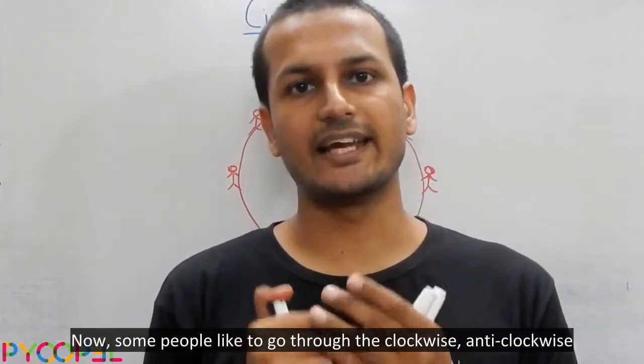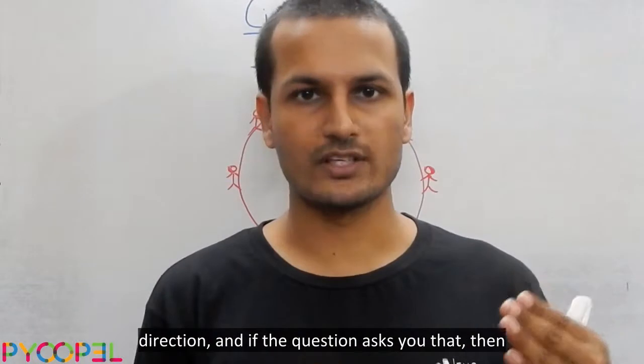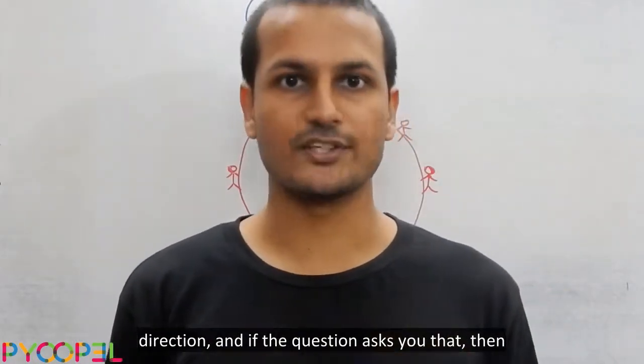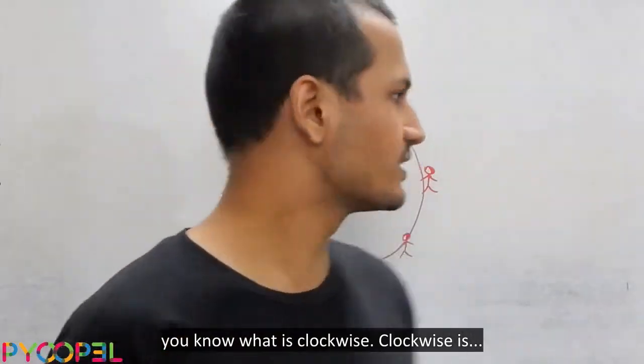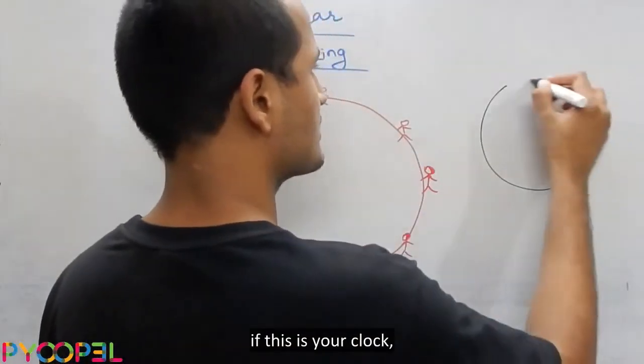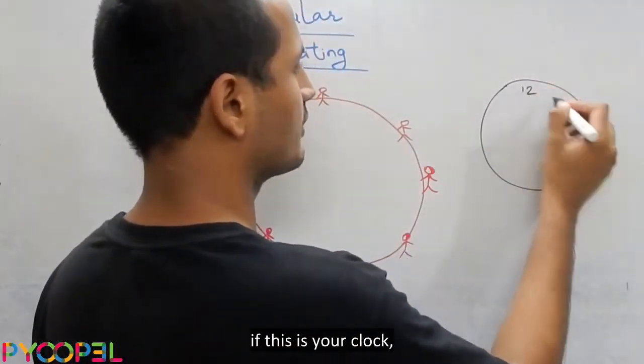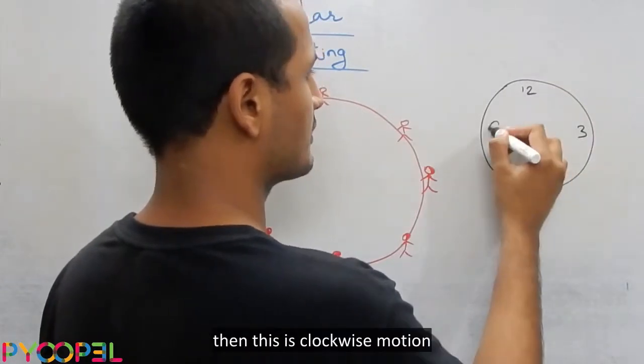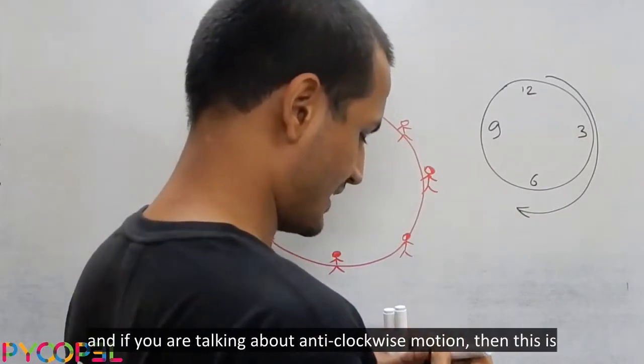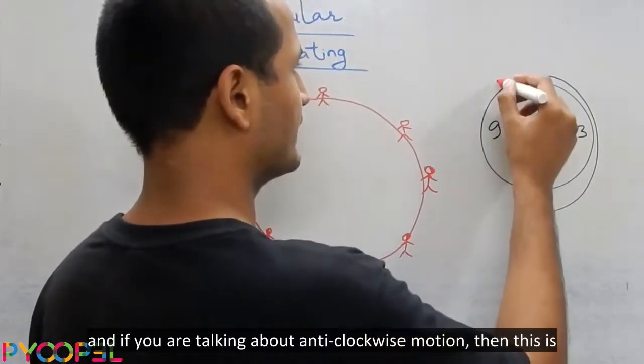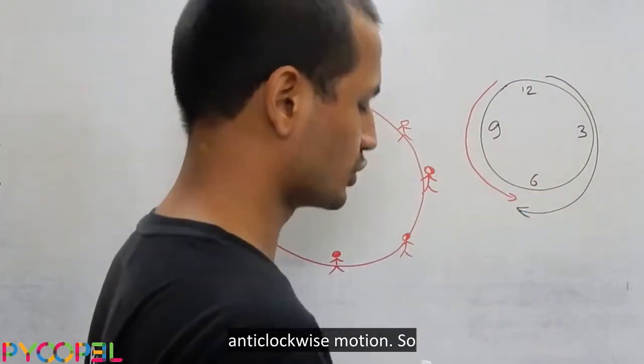Now, some people like to go through the clockwise, anticlockwise direction and if the question asks you that, then you know what is clockwise. Clockwise is, if this is your clock, then this is clockwise motion and if you are talking about anticlockwise motion, then this is anticlockwise motion.